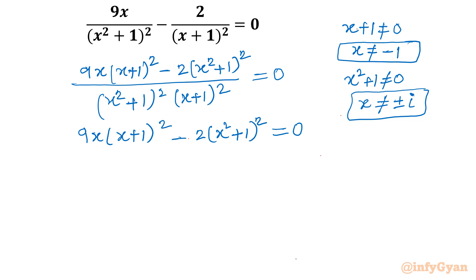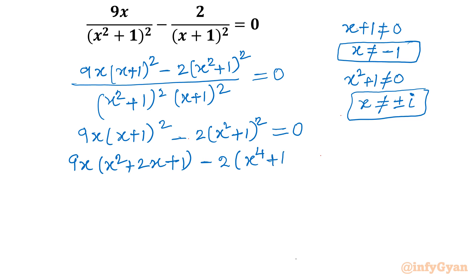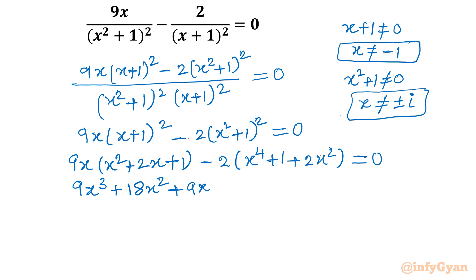Now I will expand it. So 9x times (x² + 2x + 1) minus 2 times (x⁴ + 2x² + 1). Expanding fully gives: 9x³ + 18x² + 9x minus 2x⁴ minus 4x² minus 2, equal to 0.